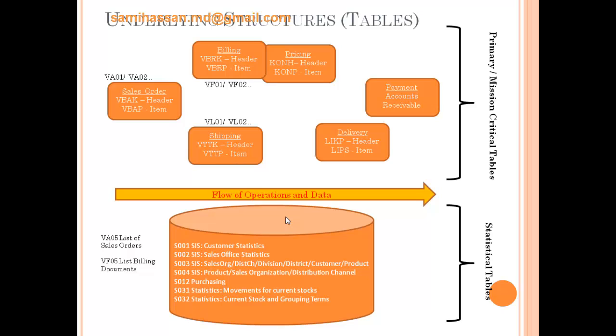Now that we have seen the optimization at the database level — the table organization for the sales and distribution module — let's see how SAP optimizes processing of data to achieve excellent or at least acceptable turnaround times in logistics applications: the update modules in ECC. Before we go ahead, let's understand the term logical unit of work, or LUW. An LUW is a cohesive grouping of actions — even if one of those actions fails, the entire bunch is cancelled and rolled back in the database.